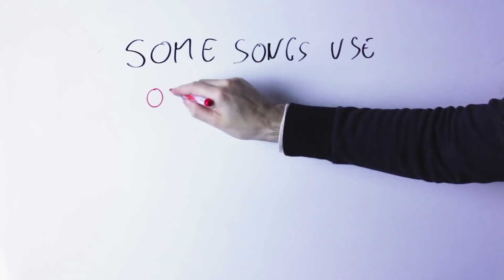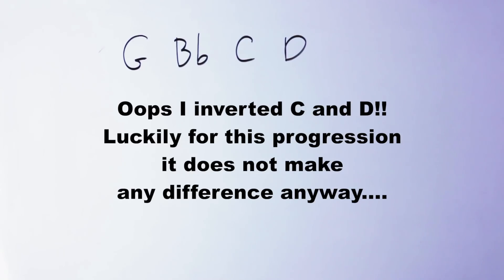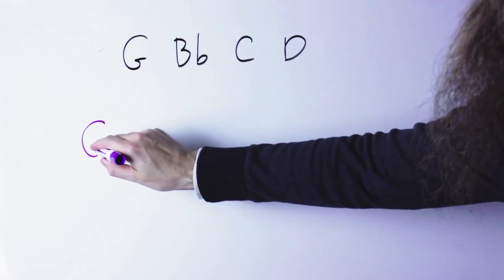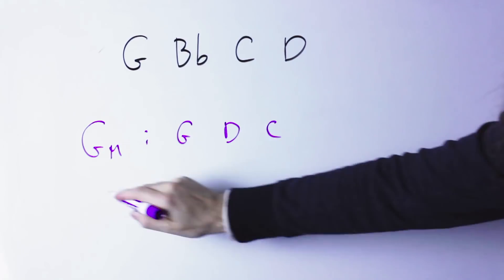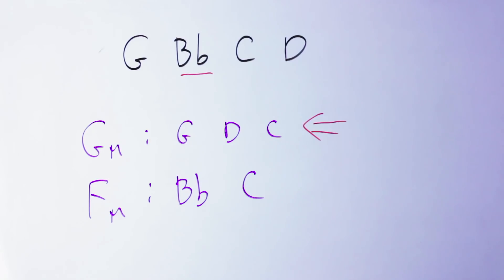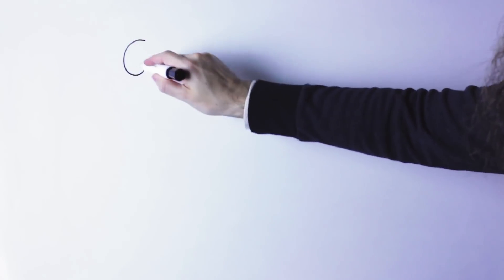Sometimes songs use chords that are out of key. For instance, if you have a chord progression like G, B♭, D, C — there is no key that contains all four chords. What you do is try to find the best fit: the key of G contains G, D, and C; the key of F contains B♭ and C. So the best fit is the key of G, and the B♭ chord is an out-of-key chord. You have to ignore the chords that don't fit. Also notice that there is no F chord in this progression and it starts with G, so it's very likely the key is G major.